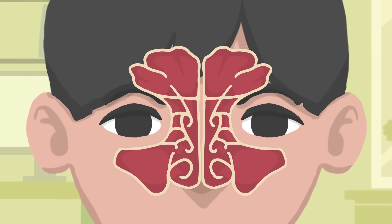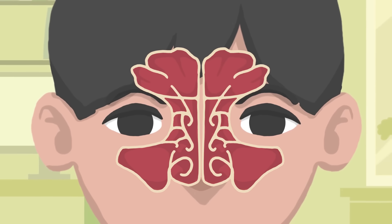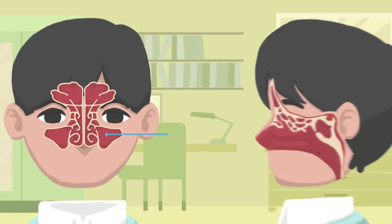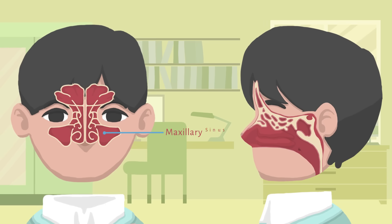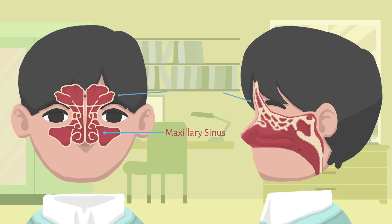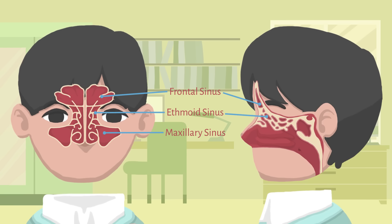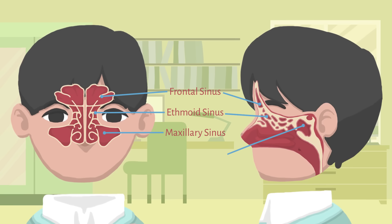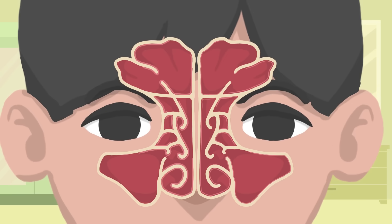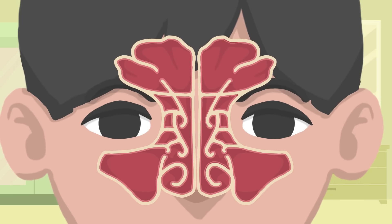Humans possess four paired paranasal sinuses. Your cheekbones hold your maxillary sinuses, the largest. The low center of your forehead is where your frontal sinuses are located. Between your eyes are your ethmoid sinuses. In bones behind your nose are your sphenoid sinuses. They're lined with soft pink tissue called mucosa.